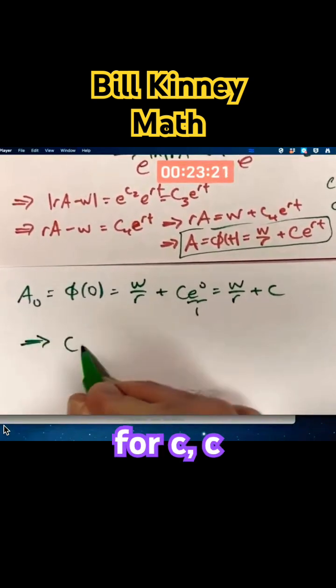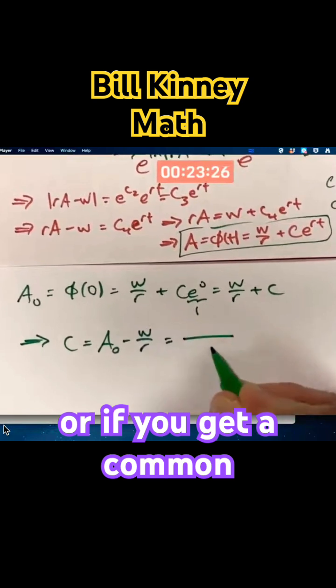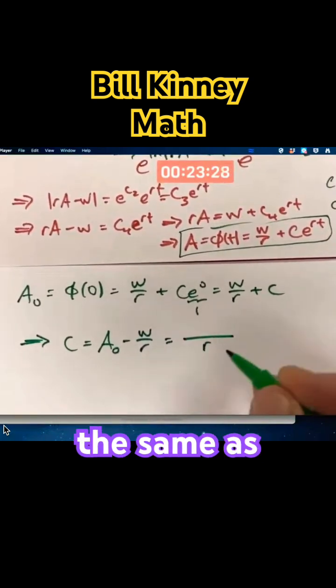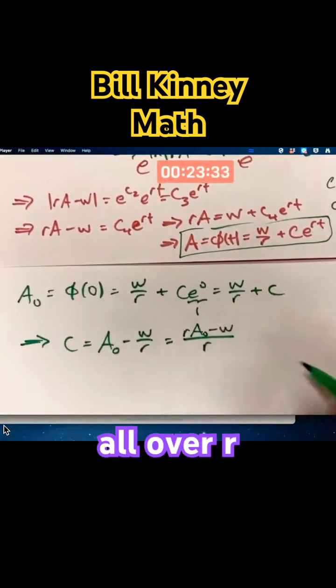Solve for c. c will be a-naught minus w over r. Or if you get a common denominator of r, that's the same as r times a-naught minus w all over r.